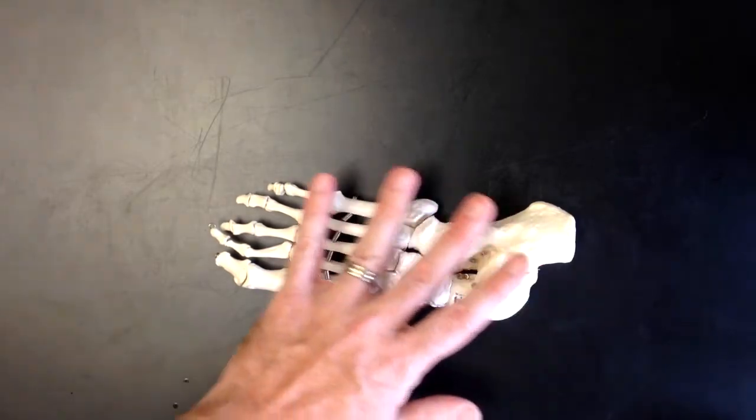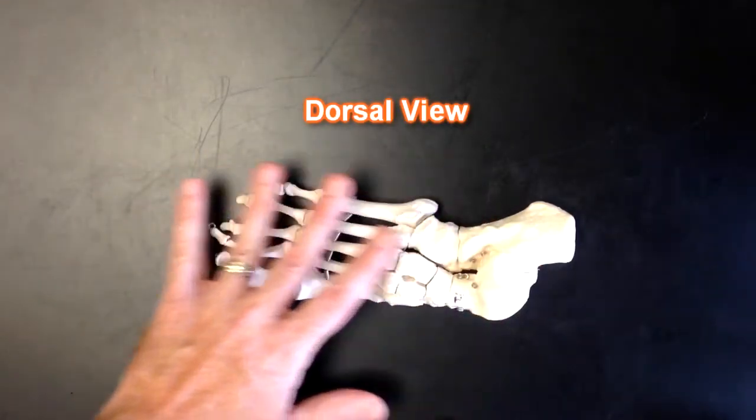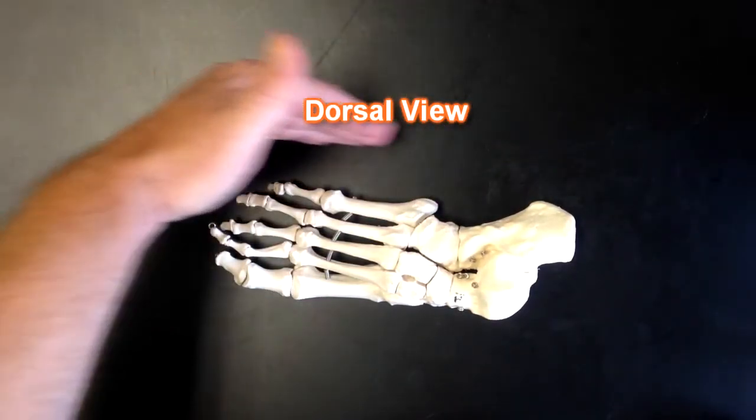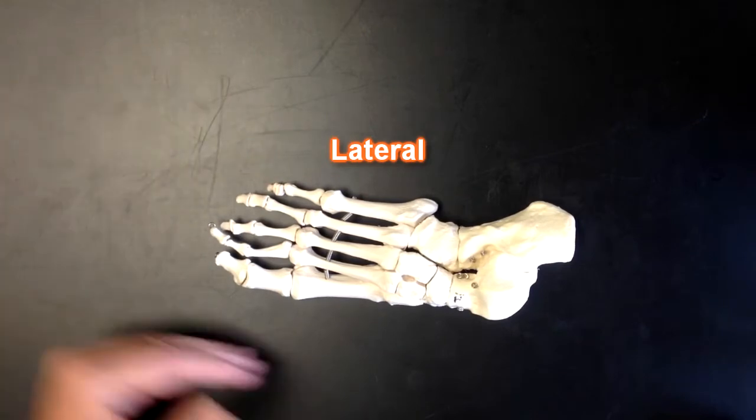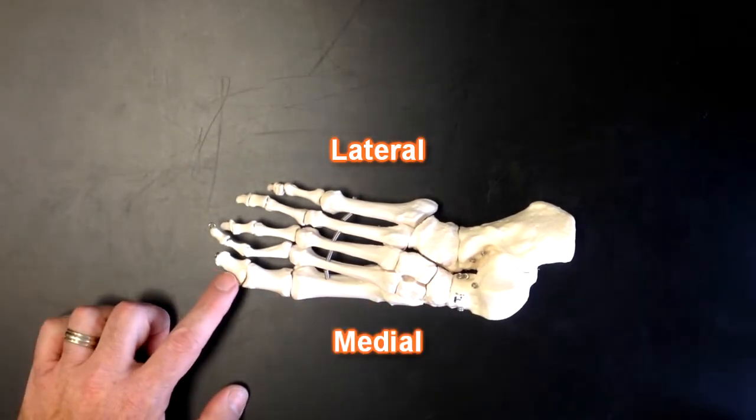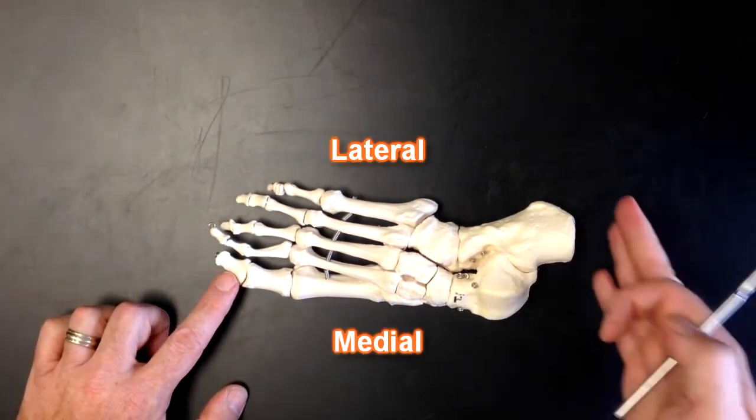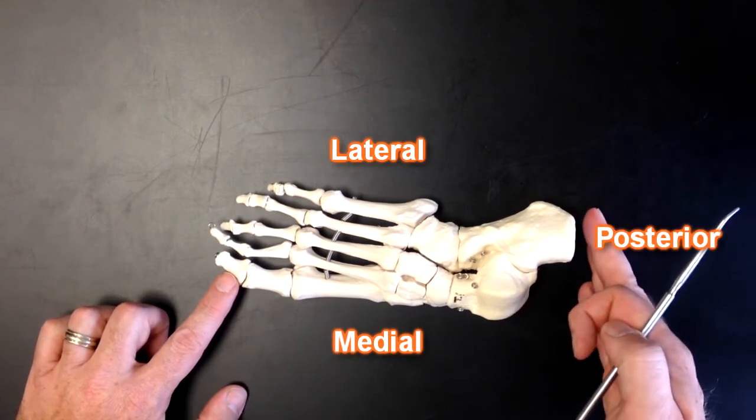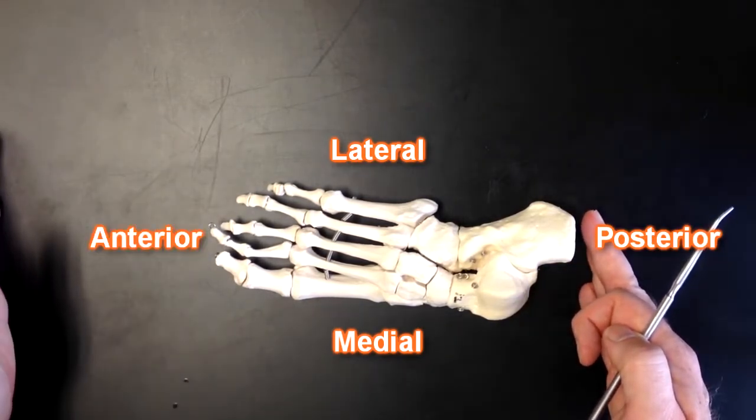So let's orient ourselves as to what we're looking at. This is a foot, we're looking at the dorsal aspect of the foot, the dorsum of the foot or the top of the foot. This would be lateral where the little toe is, this side would be medial where the big toe is. This is where your heel is going to be so this would be posterior and this would point anterior.